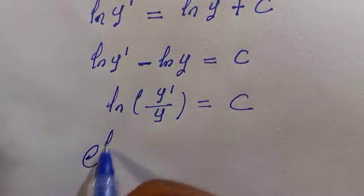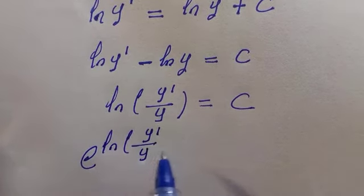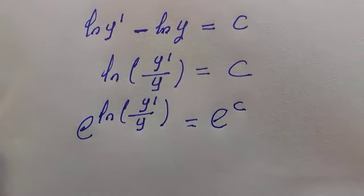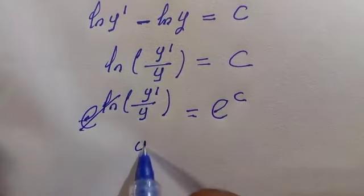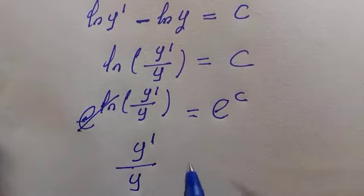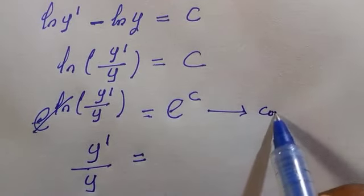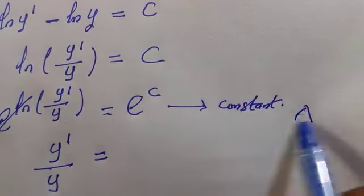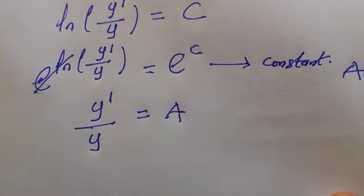To remove the ln, we introduce the exponential on both sides, since exponential and ln are inverses of each other. This gives y'/y equals e^c. Since e^c is itself a constant, we can let it equal a, so y'/y equals a.